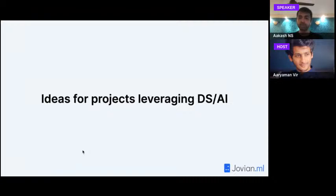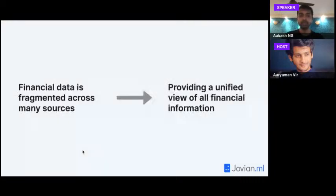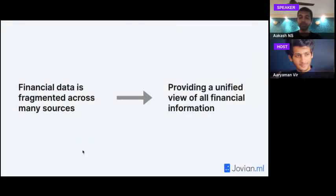Now I want to share ideas for projects leveraging the Account Aggregator platform — specifically data science and AI projects. The idea is not to prescribe what you should build, but to walk through the process: first identify the problem, second think about what the solution might look like, and third figure out how to implement it and what resources to use. The first problem was financial data fragmented across many sources. The solution: provide a unified view of all your financial information.